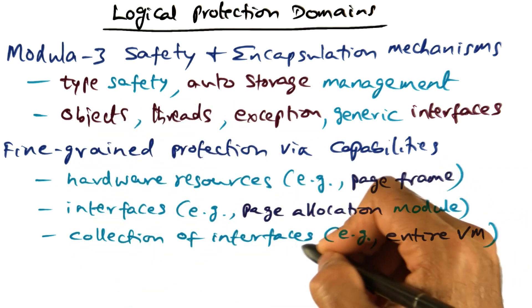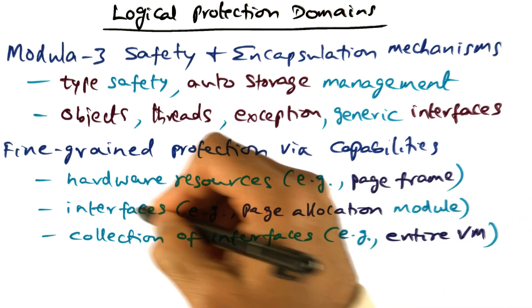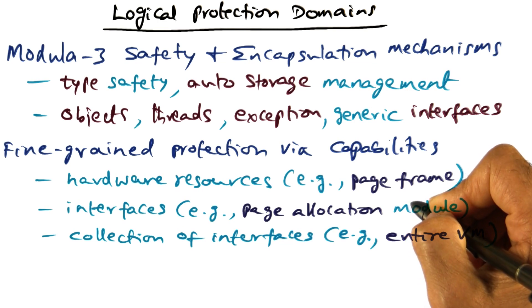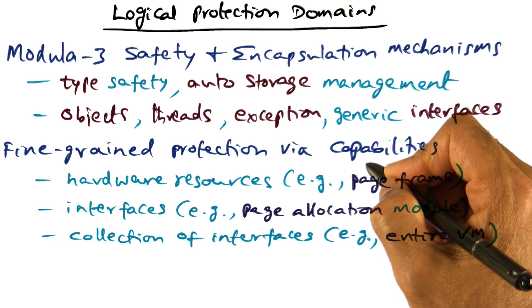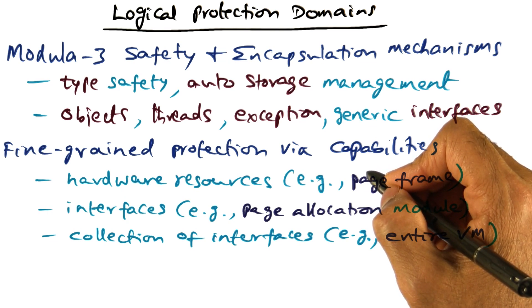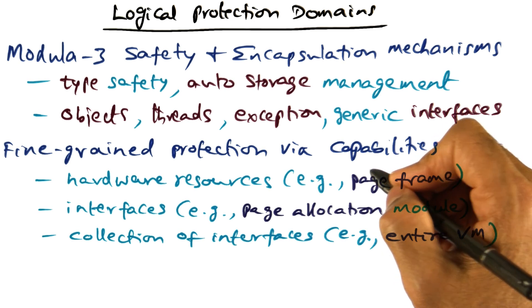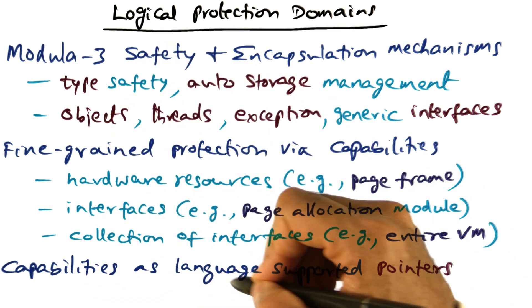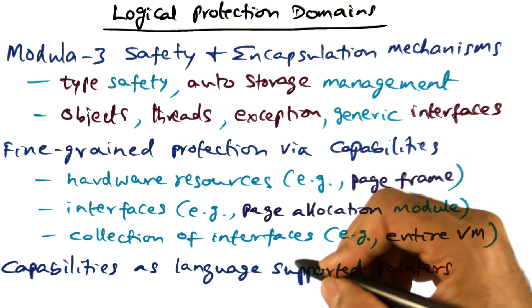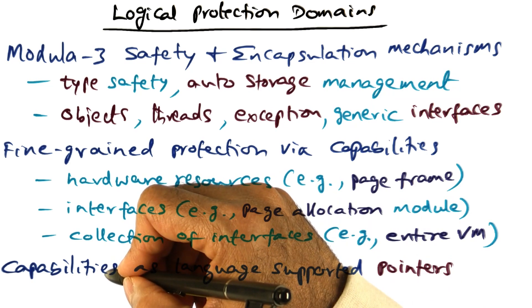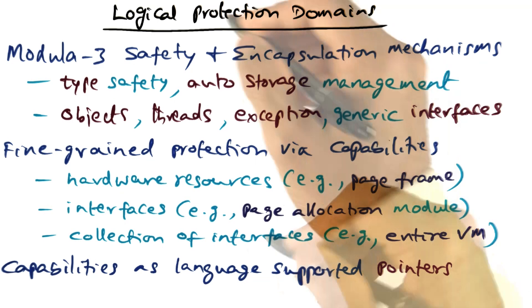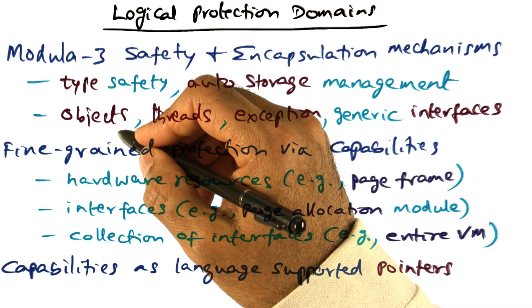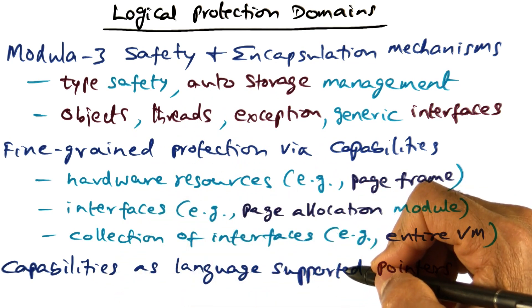All of these objects, whether at the coarse level of a collection of interfaces, an individual interface that is a component of this collection, or specific hardware resources, are all accessible via capabilities. The word capability may give you jitters because capabilities traditionally in operating system parlance signify a heavyweight mechanism. But because we are dealing with a strongly typed language, capabilities to objects can be supported as pointers — the programming language supported pointers can serve as capabilities to the objects. Access to the entry point functions within an object representing a specific resource is provided via capabilities that are simply language-supported pointers.